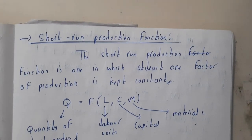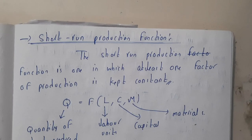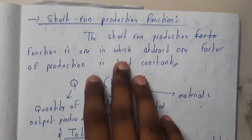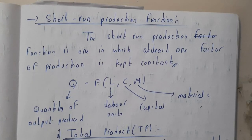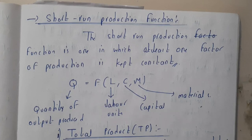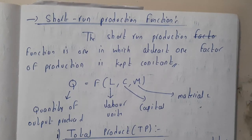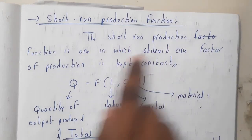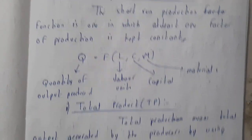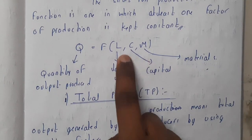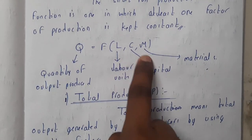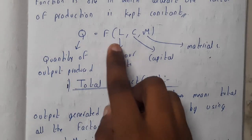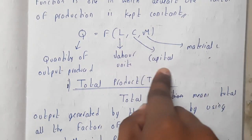In this lecture, let us go through an introduction to the short run and also discuss the law of variable proportions. The short run production function consists of different parameters used in a business where at least one factor is kept fixed. We write Q = f(L, C, M), where L is labor, C is capital, and M is material. Q will be your output quantity.